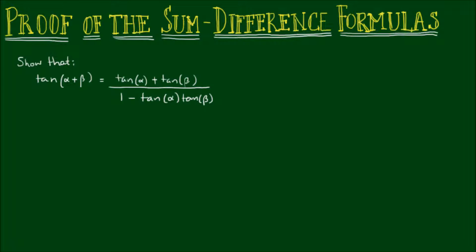In the last video, we proved the sum difference formulas for sine and cosine of two angles, and we used a combination of geometry and algebra to do that. But in this video, we'll purely use algebra to show that the sum difference formulae for tangent of two angles exists as well.